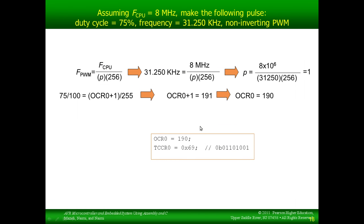So, here's an example, and this pretty much wraps up the presentation. Say we have a microcontroller, an ATmega32, with an 8 megahertz clock frequency. How do we configure it to generate the following pulse? One with a 75% duty cycle, a PWM frequency of 31.25 kilohertz, and non-inverting PWM. So, first of all, let's look at the PWM frequency. Here's an equation relating that to the CPU frequency and the prescaler value. So, we'll solve for the prescaler value, and we end up with 1 for that.